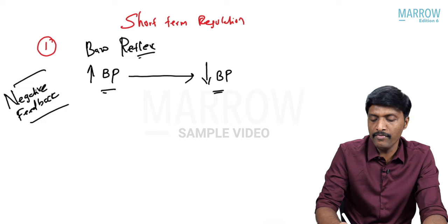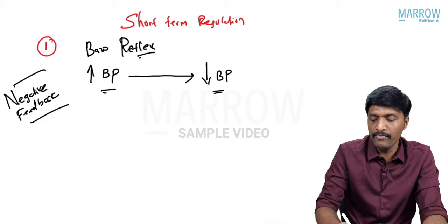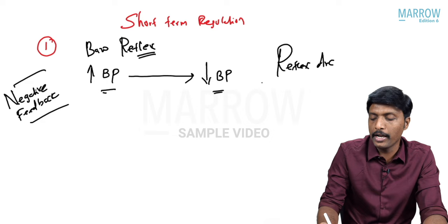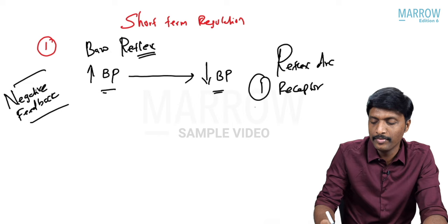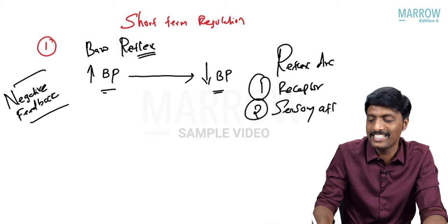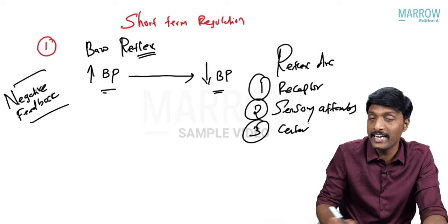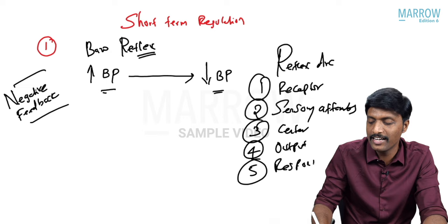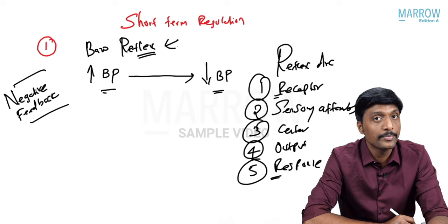The name of this reflex is baroreflex. Whenever we talk about any reflex, as taught in neurophysiology, we give importance to the reflex arc, which has five important components: the sensor or receptor, sensory afferent input to the center, the center's output, and finally the desired response. All reflex arcs start with a receptor and end with a response. We are going to apply this principle to our baroreflex.